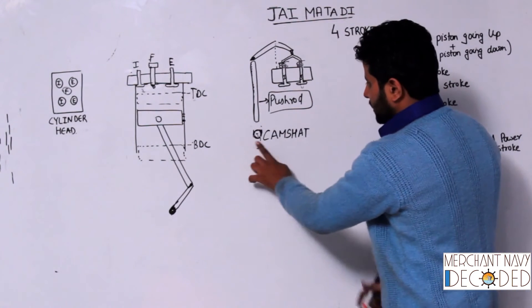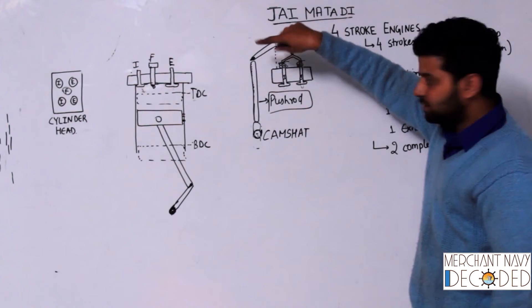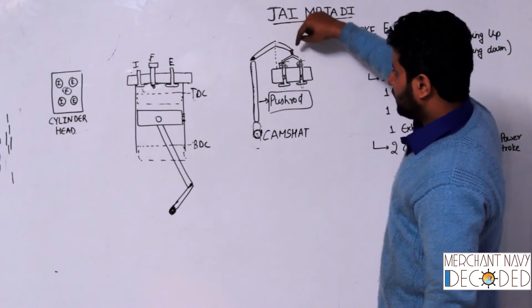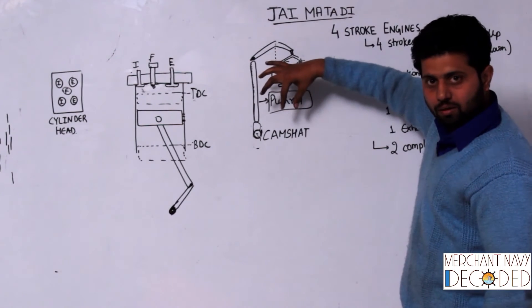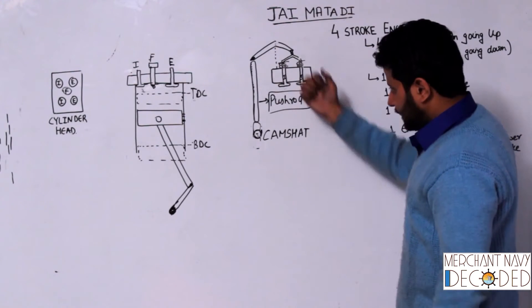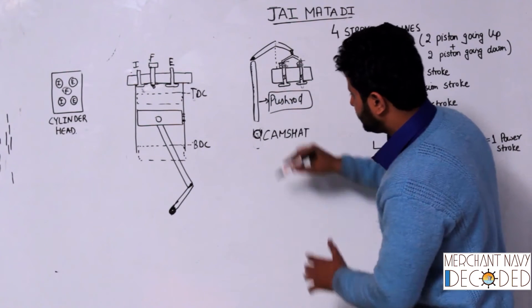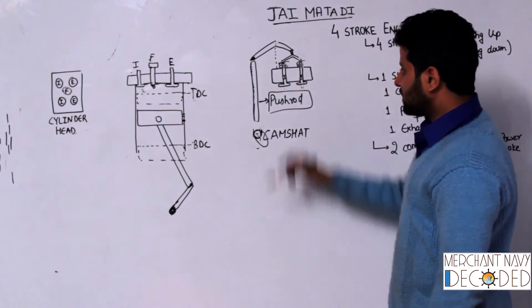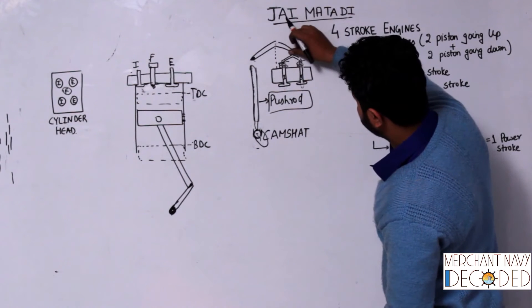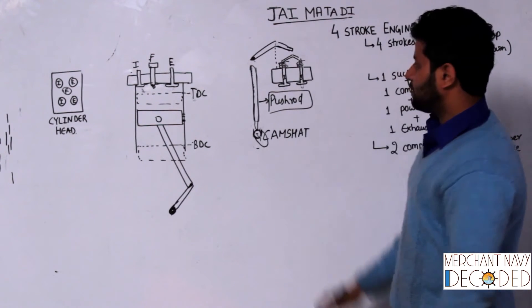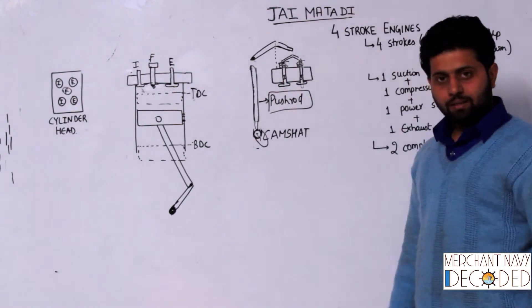Once the cam rotates back, this push rod comes down, and the spring pushes the rocker arm back up so the inlet valve closes. When the camshaft pushes the push rod up again, the rocker arm assembly brings the inlet valve downward to open. When the cam has rotated such that the cam lobe has moved away, the push rod comes down, the rocker arm is no longer pressing, and the inlet valves are closed. Similarly, this happens for the exhaust valves as well.